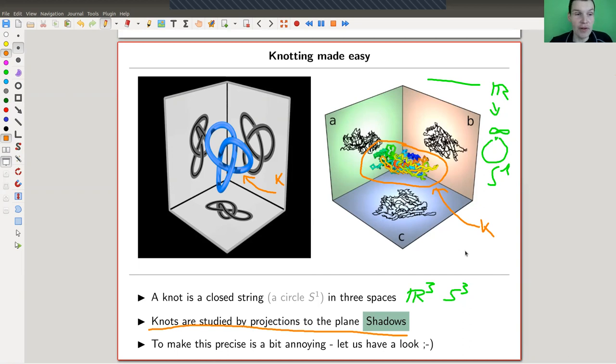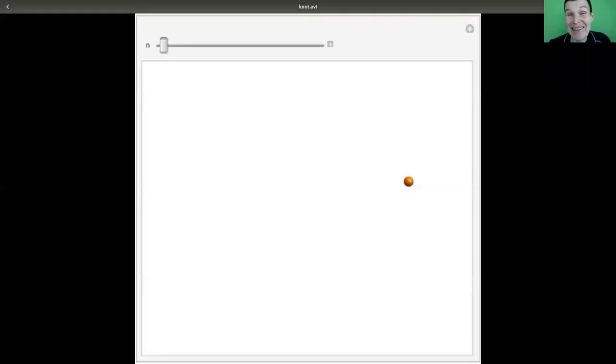So this is the knot, let's call it K. And this is a knotted protein. Basically, it's knotted as well. So it's a string that you put into three space. And you would like to identify its ends. I'll show you in a second why you need to identify its ends.